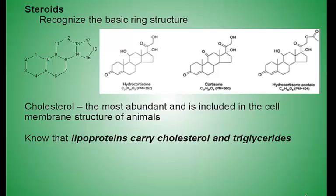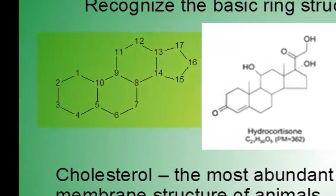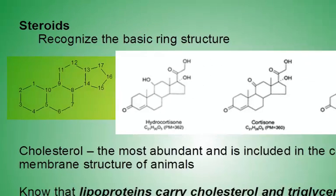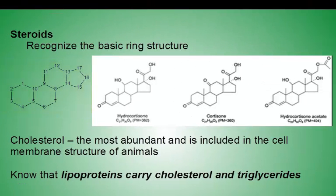Steroids have the basic structure shown to the left. To the right of that basic structure are three examples of steroids: hydrocortisone, cortisone, and cortisone acetate. In all three of those examples, you can see the basic ring structure of steroids.